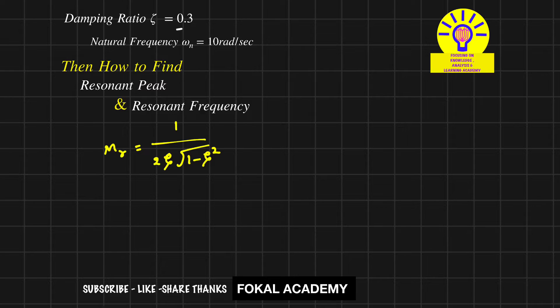That is given as 0.3. That is equal to 1 by 2 into 0.3 into root of 1 minus 0.3 square. By simplifying this, we'll get resonant peak equal to 1.7471.